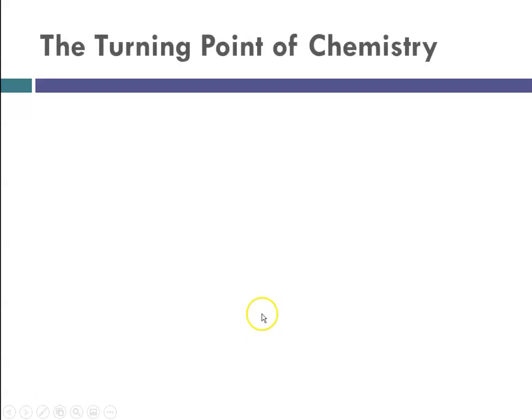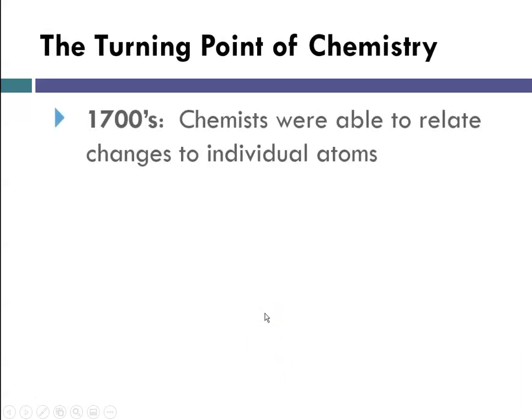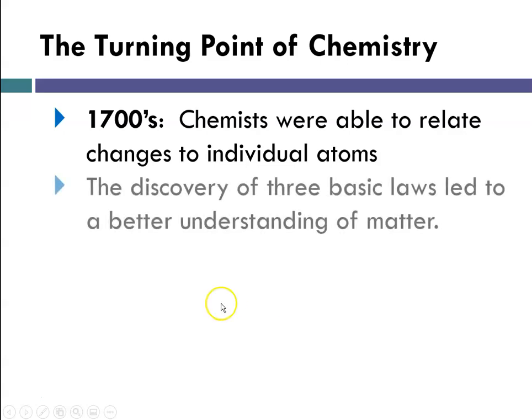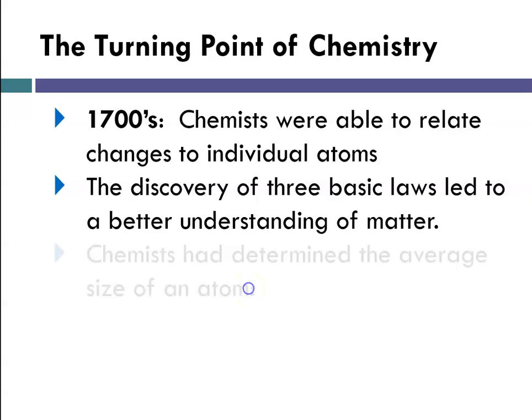The turning point of chemistry came in the late 1700s. At that point, chemists were able to relate changes that they observed to individual atoms. There was a discovery of three basic laws that really led to a better understanding of matter and led to theories describing atoms.